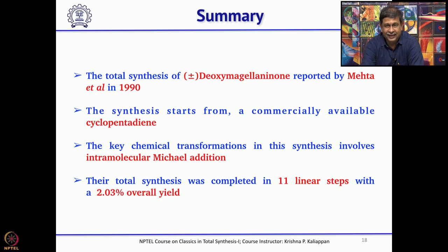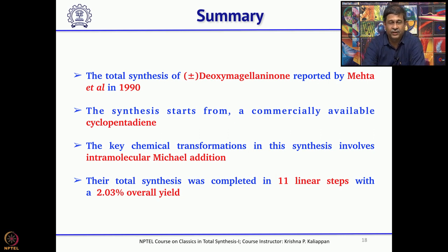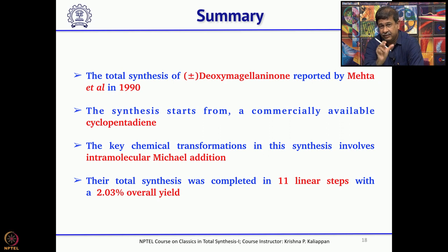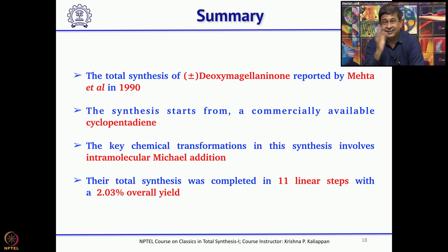Overall, it took 11 longest linear steps and the yield was a little lower, but considering the complexity of the molecule a 2% overall yield is really good. This way he could successfully extend the methodology developed in his laboratory not only to triquinanes but also to other natural products having a dicyclopentane as a substructure.